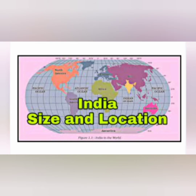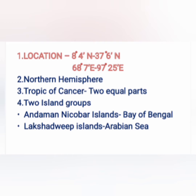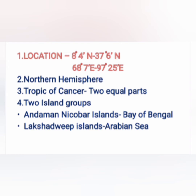India is a vast country. Here are four important factors about India's location. The first one is India completely lying in the Northern Hemisphere. The second factor is the location of India, which is 8 degrees 4 minutes north to 37 degrees 6 minutes north and 68 degrees 7 minutes east to 97 degrees 25 minutes east.